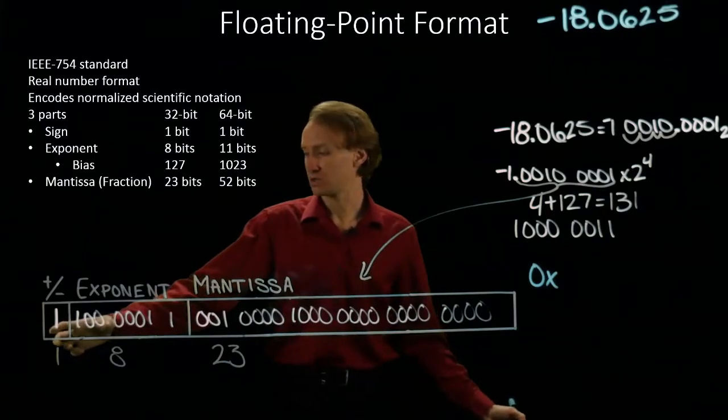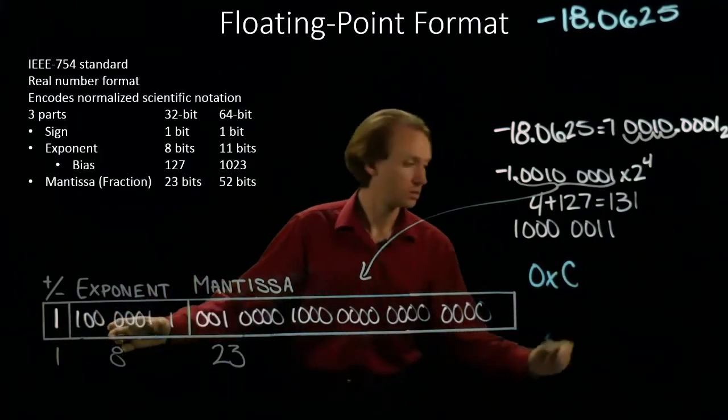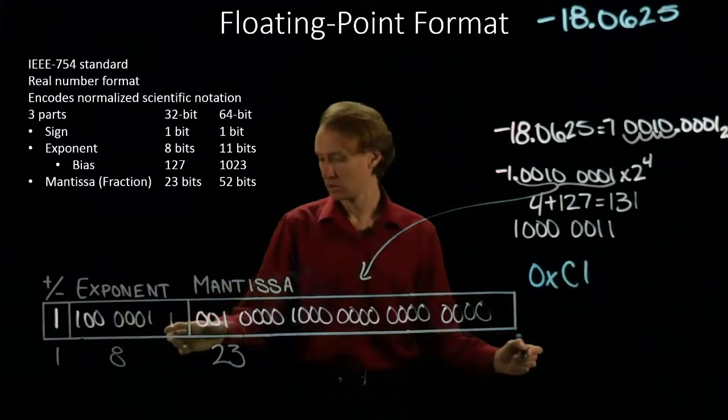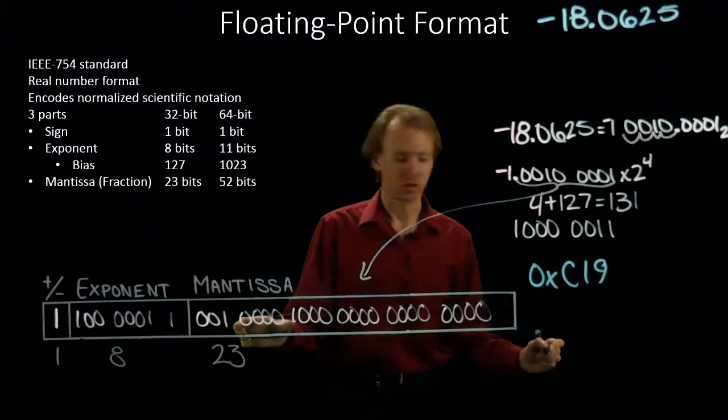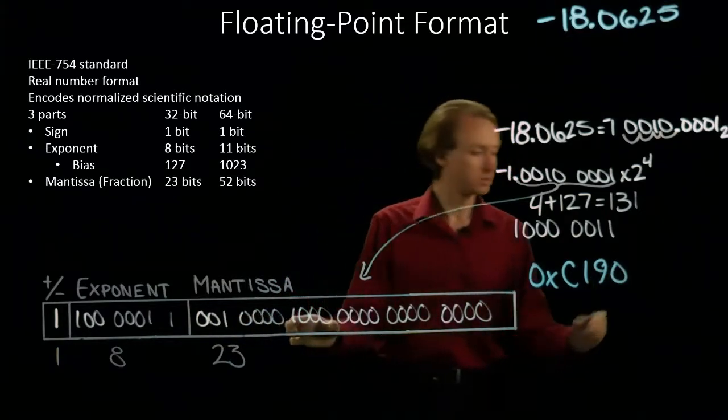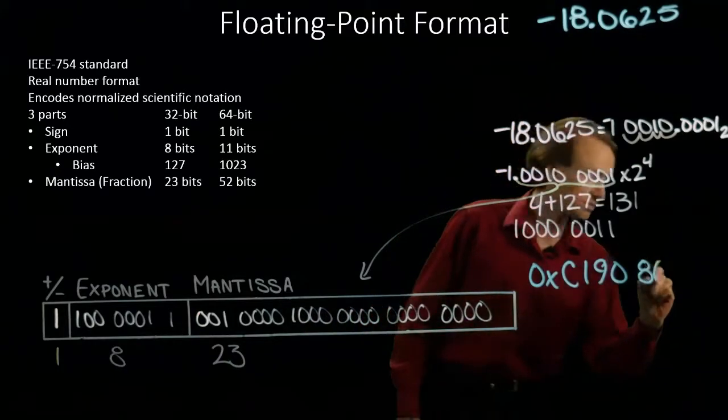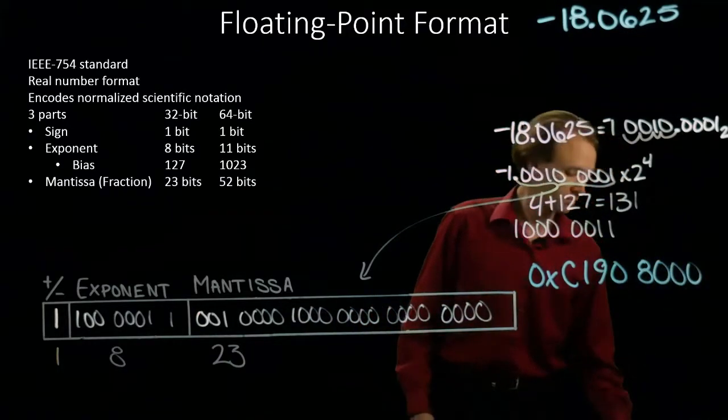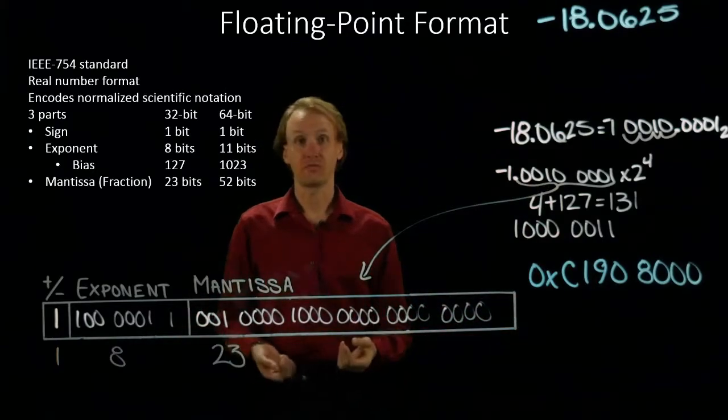So here I've got C, 1, 9, 0, 8, and then 0, 0, 0. So there is the hexadecimal equivalent of our floating point format number.